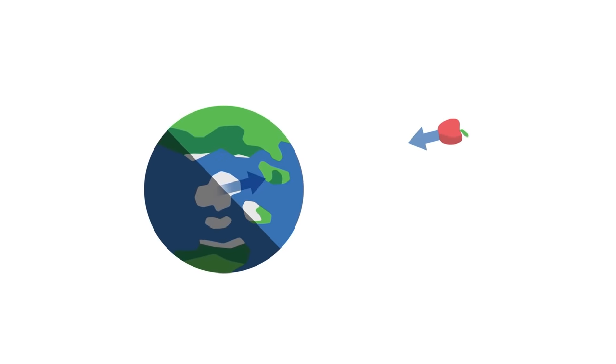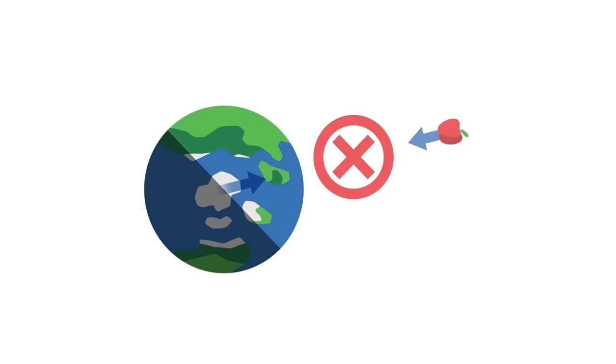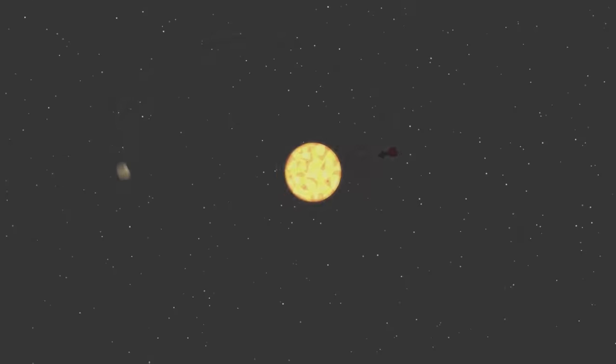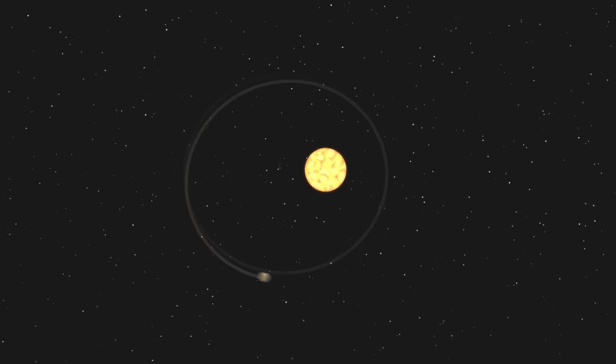However, this description is merely an approximation, and it fails when the pull is too strong, such as the path of Mercury around the Sun.